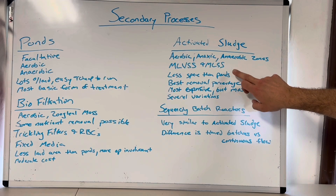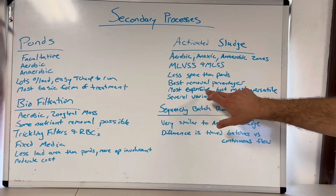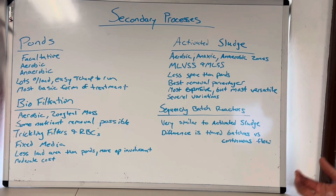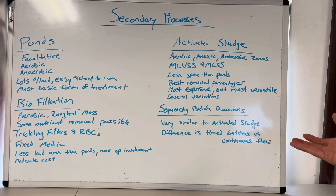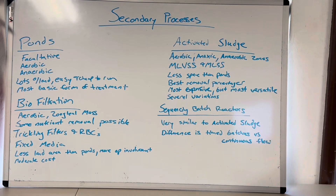Activated sludge uses way less space than ponds, especially with something like an MBR. It has the best removal percentages but is the most expensive — you get into blower costs that run all the time and are expensive, plus a lot of mechanics and moving parts that can break. Power and labor are the two most expensive things to run. But they are the most versatile — you can do a lot with it. Variations include oxidation ditch, extended aeration, and pure oxygen activated sludge.